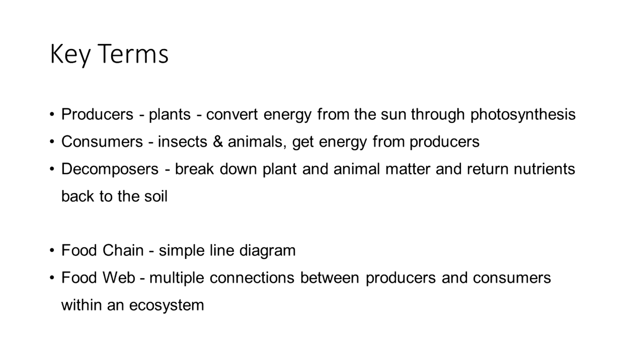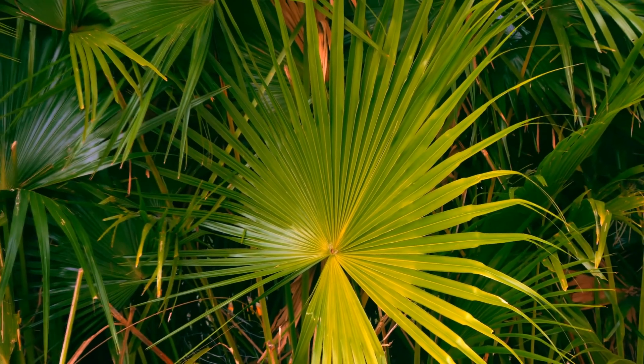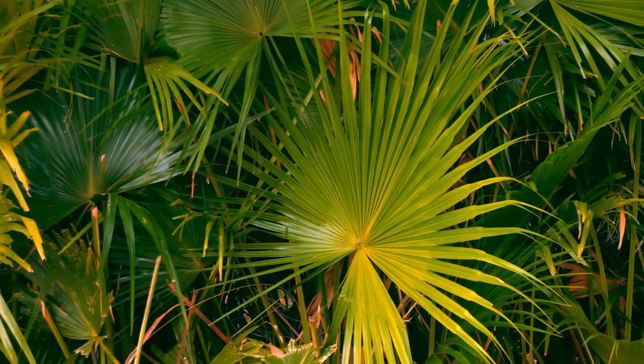Before we look at food chains and webs, there are a few key terms that you need to know when referring to different aspects in this topic for ecosystems. Producers are plants that convert energy from the sun through photosynthesis.